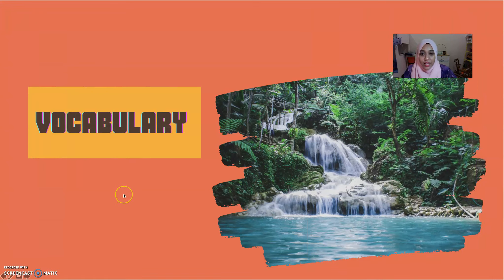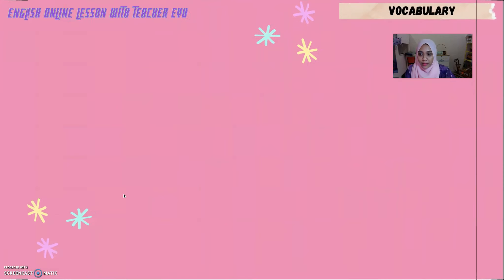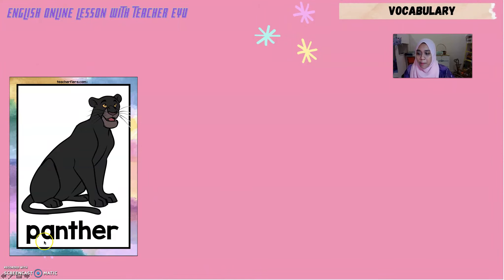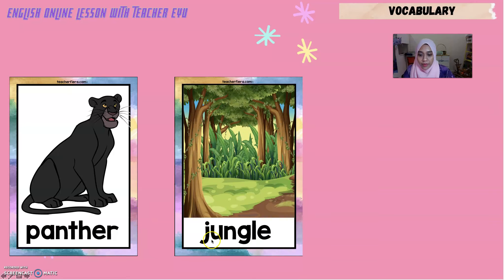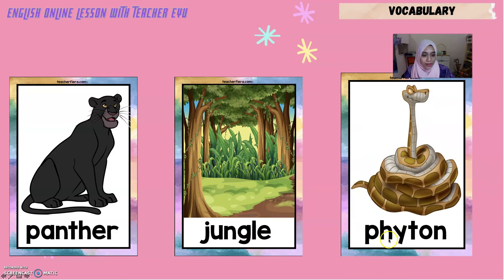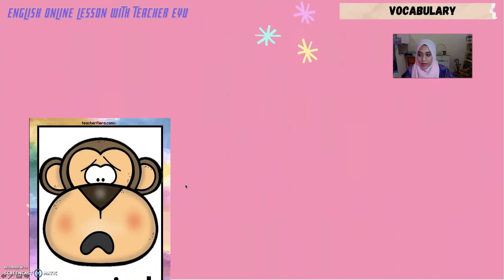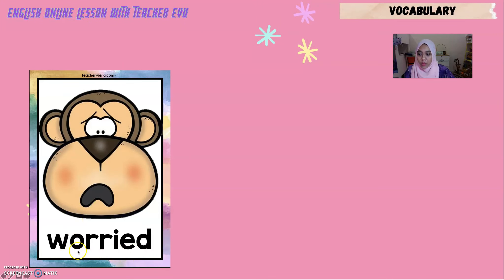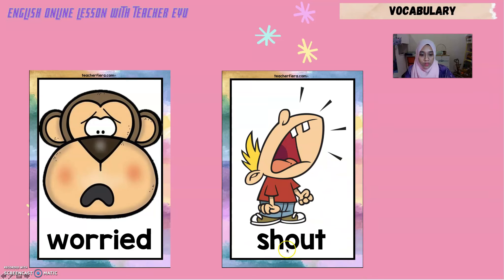Now let's look at the vocabulary for today. The first vocabulary is 'panther' — panther means harimau kumbang, the black tiger. Next vocabulary: 'jungle' — jungle means hutan. 'Python' — python is ular sawa. 'Worried' — worried means risau. Lastly, 'shout' — shout means menjerit.